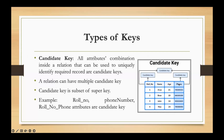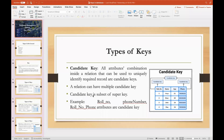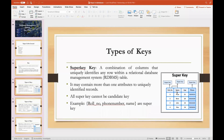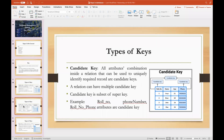A combination of attributes that uniquely identifies a record can be a candidate key. Now, what is the candidate key? How many times can you identify the candidate key? The candidate key is the minimal set of attributes that can uniquely identify every record. We can find candidate keys by looking at single individual attributes or combinations of attributes.